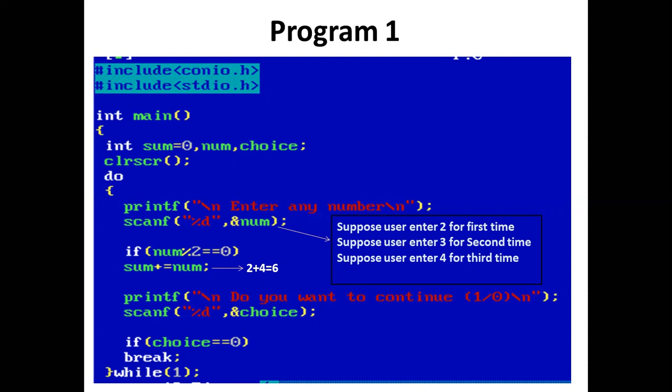If 1 equal to 0 is false. So again control enters the do-while loop. The printf statement prints 'Enter any number.' The user enters 4. If 4 mod 2 equal to 0 is true. So sum plus equal to num: 2 plus 4 is 6, and sum is assigned value 6.